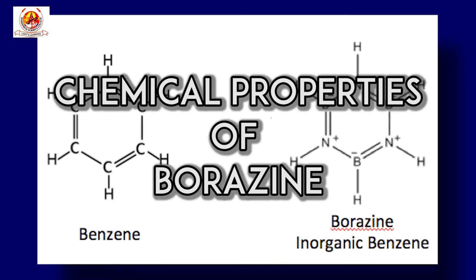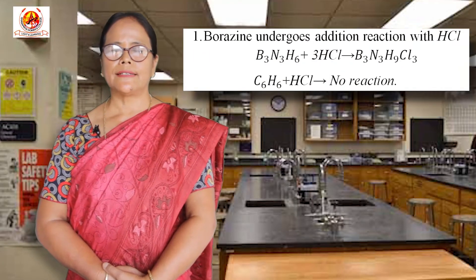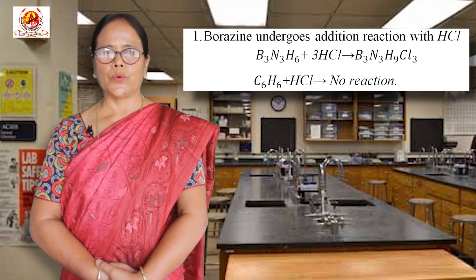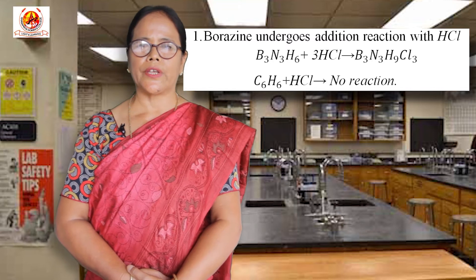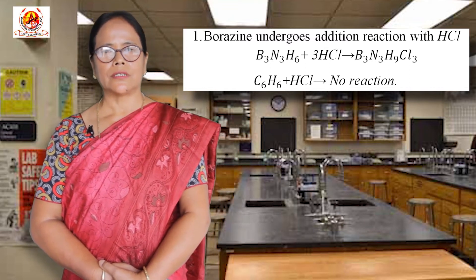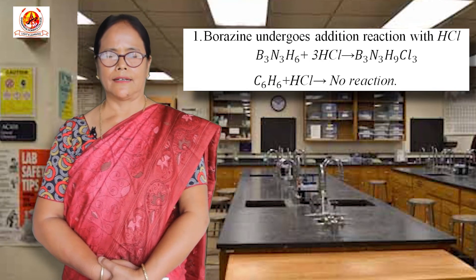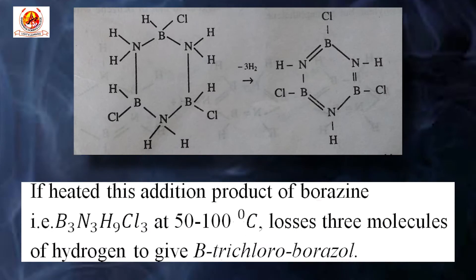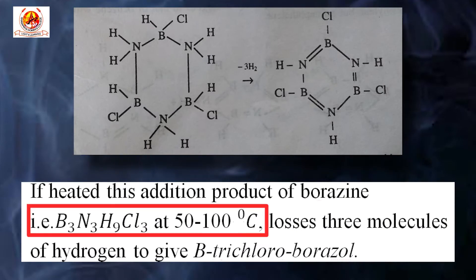However, the chemical properties of borazine and benzene are quite different. Properties number one: borazine undergoes addition reaction with HCl to give an adduct B3N3H9Cl3, but benzene does not undergo any addition reaction with HCl. If heated, the adduct B3N3H9Cl3 at 50 to 100 degree centigrade loses three molecules of hydrogen to give boron trichloroborazine.